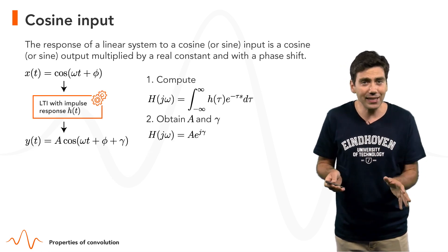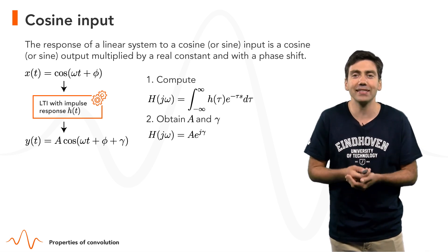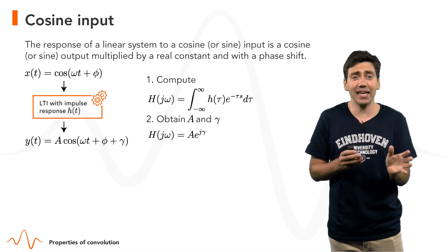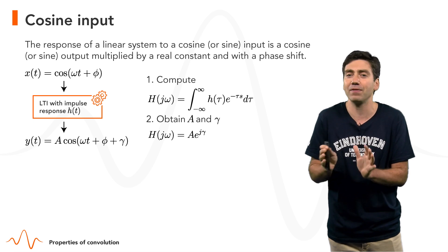Again, just as in discrete time, in continuous time, the response of an LTI system to a cosine or a sine is a cosine or a sine multiplied by a real constant and the phase is shifted by a given constant.